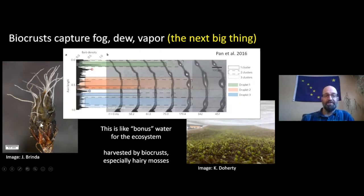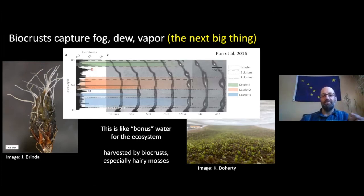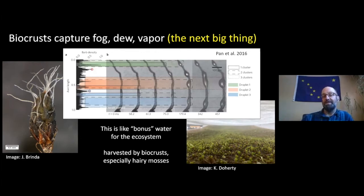Mosses in particular, like our friend Centrichia cannervis, are really quite good at this, and it comes down to that awn. The awn has little teeth on it — it's kind of jagged. If that awn is exposed to a foggy atmosphere, water will nucleate on it, especially near those little teeth. As the water collects, it forms droplets, and eventually the droplets get heavy and flow down towards the plant, hydrating it and turning on photosynthesis. Had the bio crust not been there, that fog dew or vapor would not have been captured — but since the bio crust is there, it gets this bonus period of activity and this bonus water.